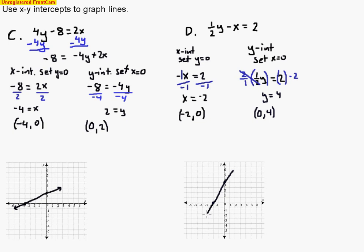So now I can connect those two points with a line. And that's it. Arrows at the end showing that it goes on forever in those two directions. So that's graphing using x-y intercepts. The key is always make sure that you get x and y on the same side so that you're left with just a one-step equation when you set the other variable equal to 0.